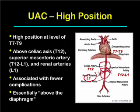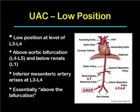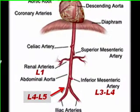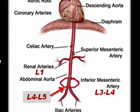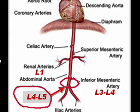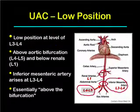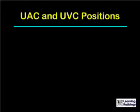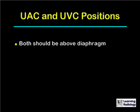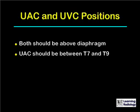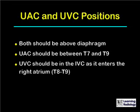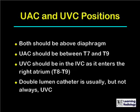Essentially, the high position is above the diaphragm. The low position for an umbilical artery catheter is at the level of about L3 to L4, which is above the aortic bifurcation at L4 to L5, and below the level of the renal arteries at L1 and the inferior mesenteric artery at L3 to L4. Essentially, this low position is above the bifurcation. To review, both catheters are usually above the diaphragm. The umbilical arterial catheter is between T7 and T9; the umbilical venous catheter should be in the inferior vena cava as it enters the right atrium, approximately at T8 to T9. A double lumen catheter is usually, but not always, the umbilical venous catheter, depending on local institution practice.